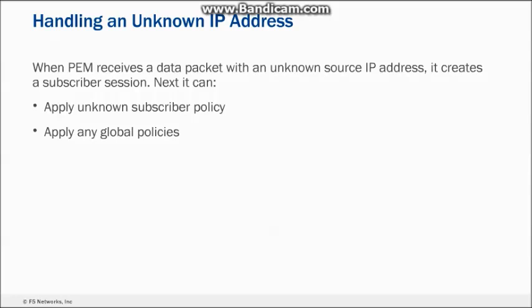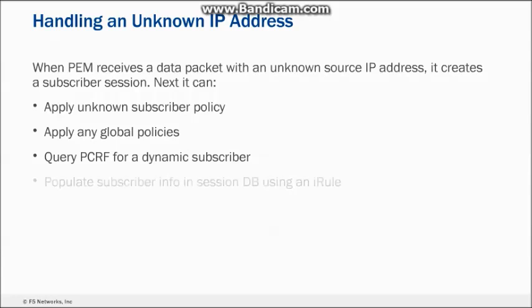An example of a global policy is a bandwidth limitation that is applied to everyone who connects to the system. PEM can query the Policy and Charging Rules Function to see if the PCRF can provide subscriber information based on the IP address. PEM can also use an iRule to populate subscriber information in the Session database. If PEM discovers subscriber information associated with the IP address by any of the preceding means, it enforces the appropriate policies for that subscriber. If not, the unknown subscriber policy and global policies dictate the level of access to the system.